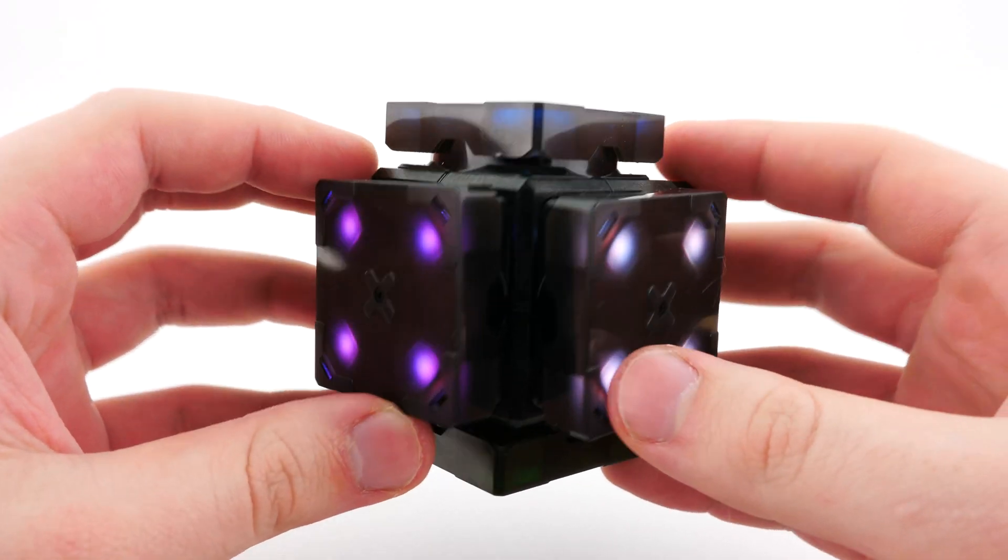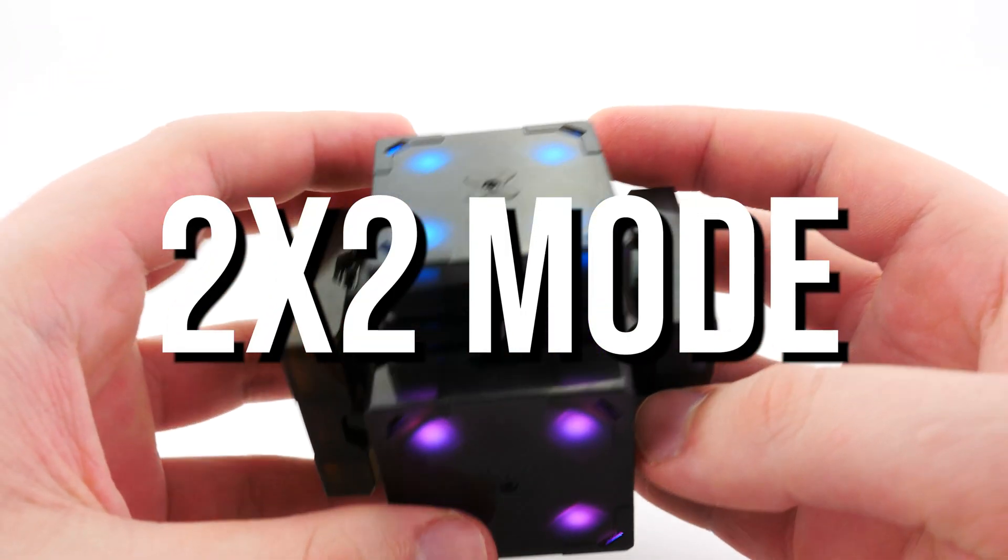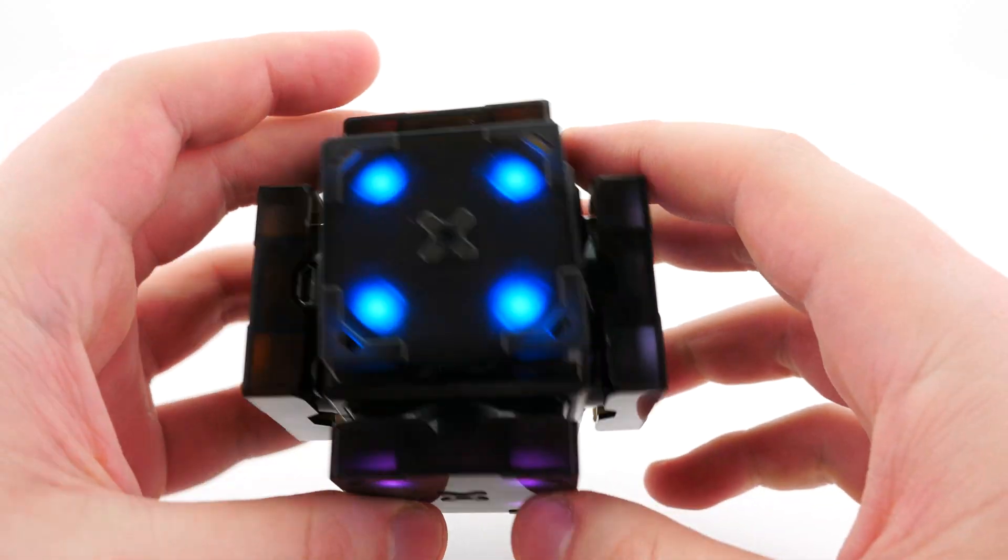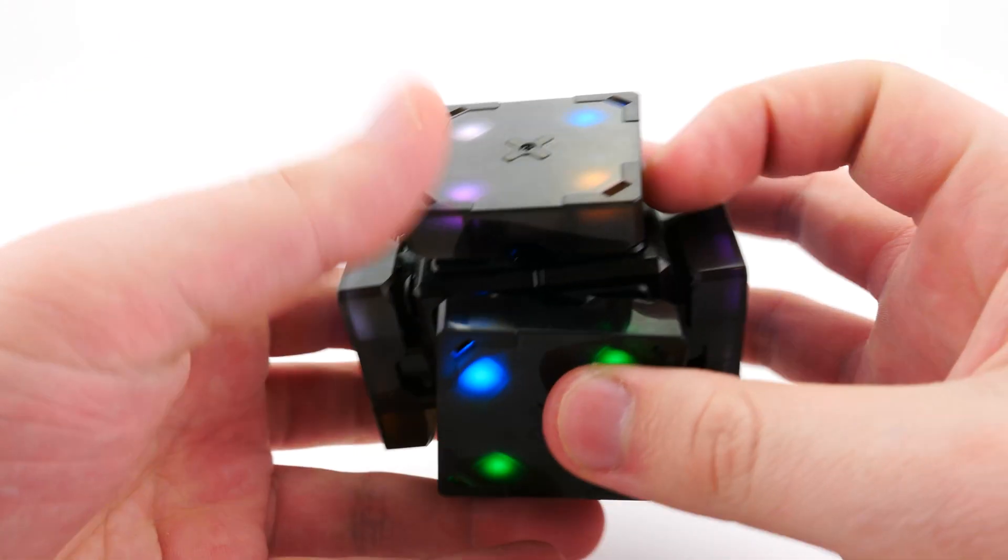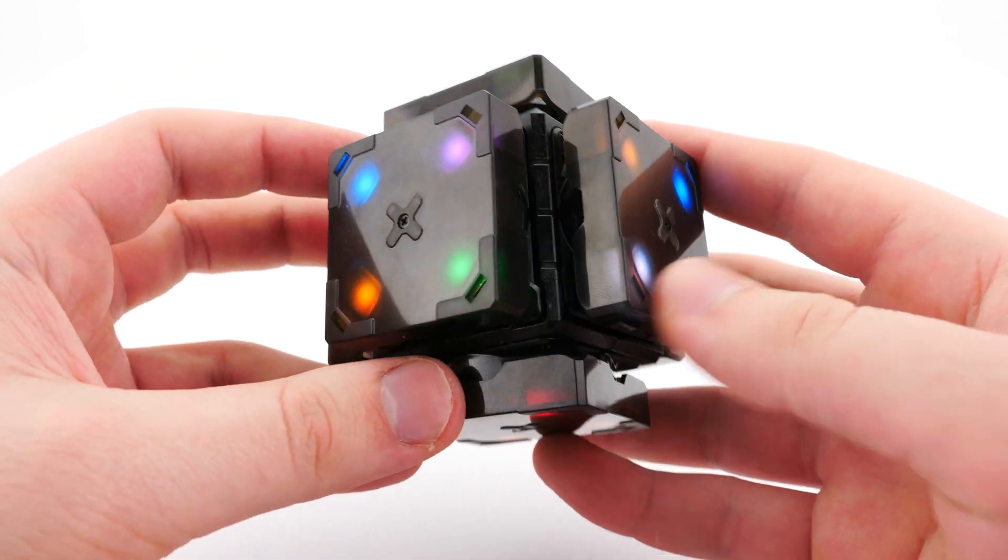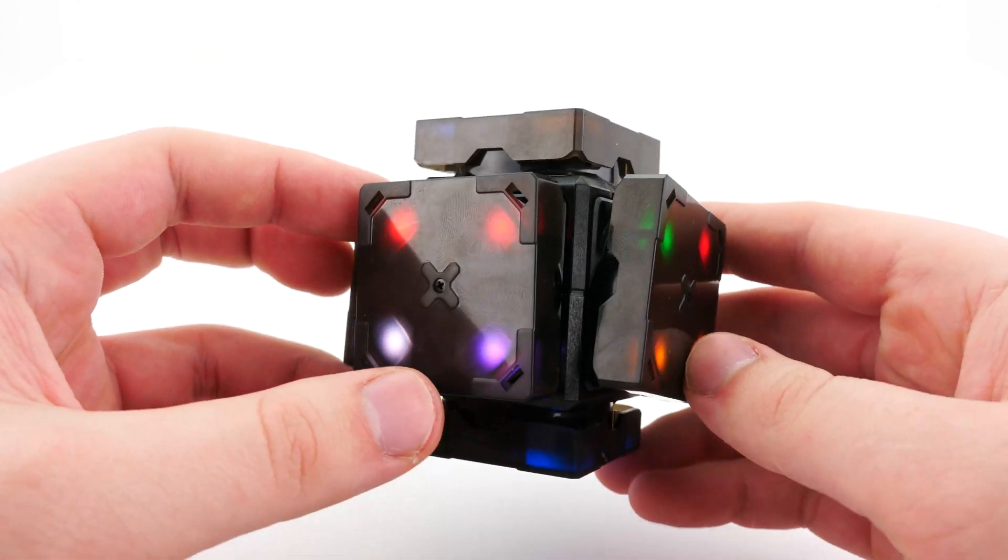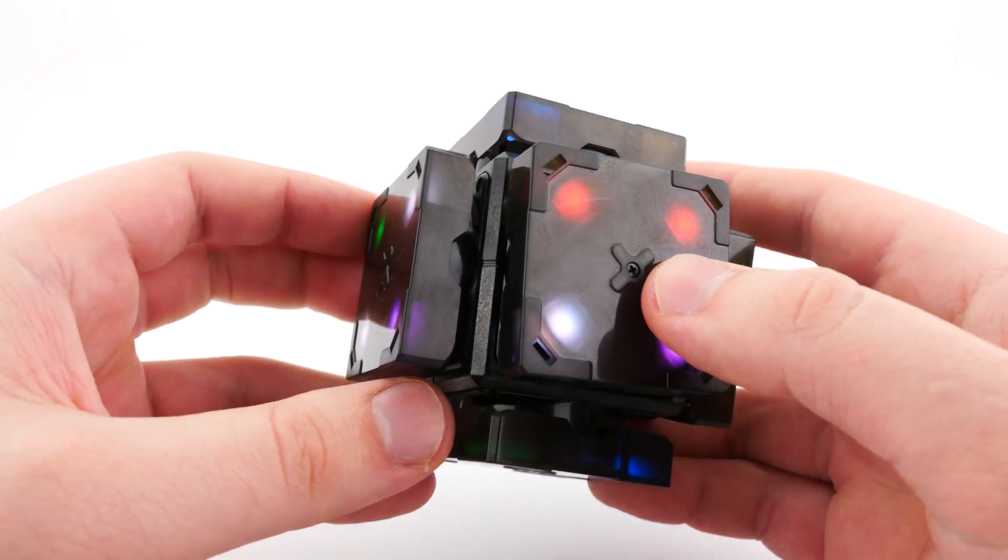Another function that is really cool is the 2x2 solving mode. So as you can see, it essentially disables the lights in the middle and the edges, and now it's just a 2x2, which really gives you more value for money, because it's gone from a 3x3 puzzle, and now to a 2x2, which is really cool. And this is definitely one of my favorite functions.